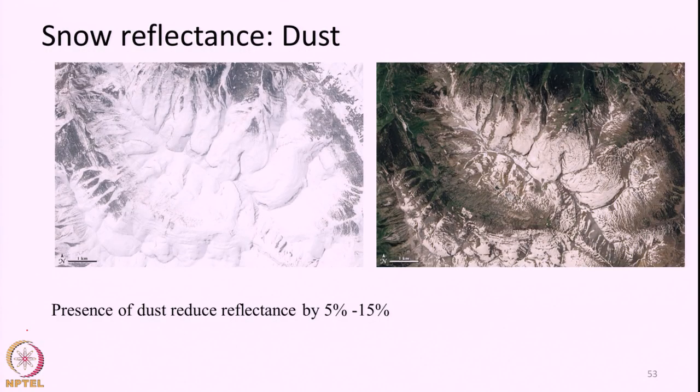Finally, presence of any contaminants. Snow has the highest reflectance among most commonly occurring earth surface features, especially in the visible domain. Whatever other objects fall on snow will reduce the reflectance of snow — some sort of dust, sand particles, vegetation, or anything that falls on snow will in general have lower reflectance than the original reflectance of snow. This is highly true in the visible domain, so presence of any contaminant will decrease the overall reflectance of snow.